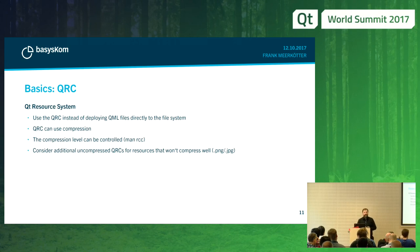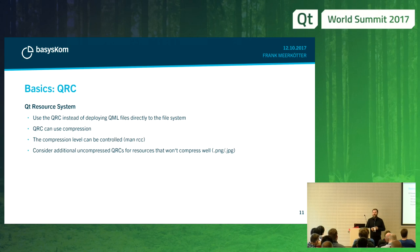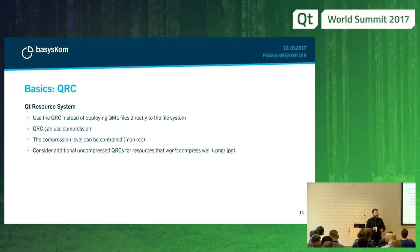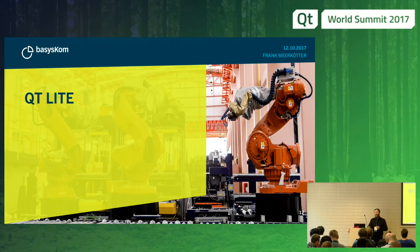One last basic — it's a small trick. Qt has the Qt resource system, and it's a good idea to use it because it's very portable. Instead of deploying all your QML resources into the file system, you can embed them into your binary or into a shared library. QRC has a compression option, and for things easy to compress like QML files, you can make a special QRC where you crank up the compression level. This might save a bit, depending on how much QML you have. With that, we close the basics and look at actual Qt Lite.